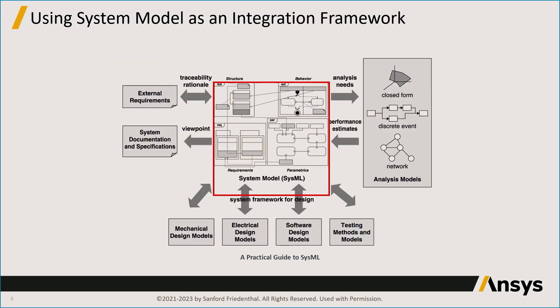In this slide, you can see the system model enclosed in the red box. You can see it used as a source of information that integrates with many other different sources, including mechanical design models, electrical design models, software design, and testing. On the right, you see a set of analysis models. The system model can also integrate with external requirements captured in a requirements database, and the information can be used to generate various system documentation — but they all come from a single source. This is a very important aspect of a system model: it serves as this integration framework.